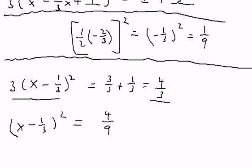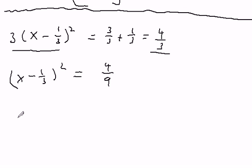And I take the square root of both sides, and I get x minus 1 third equals plus or minus the square root of 4 ninths.